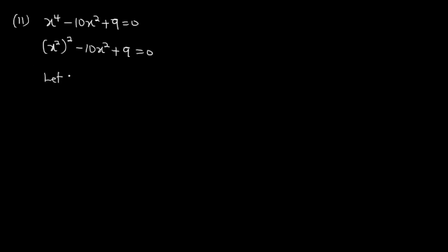We let y = x² and substitute, getting y² - 10y + 9 = 0. The coefficient of y² is 1; 1 × 9 = 9. We need two numbers that multiply to 9 and add to -10: negative 1 and negative 9 work, since (-1) × (-9) = 9 and (-1) + (-9) = -10. So we rewrite as y² - y - 9y + 9 = 0.